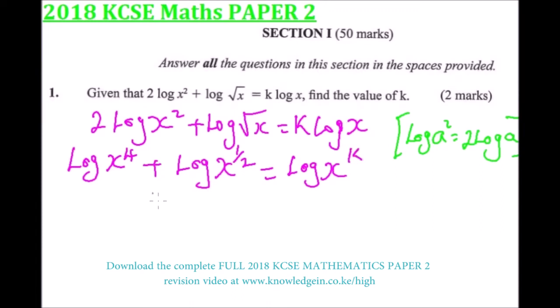Applying the first law of logarithm, we can write this as a single logarithm on the left-hand side. When we have plus, we write it as x to power 4 multiplied by x to power a half. That equals the logarithm of x to power k.